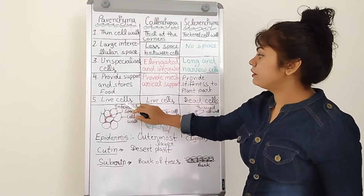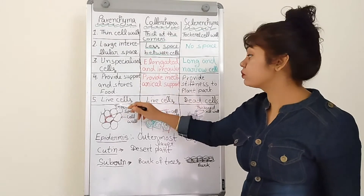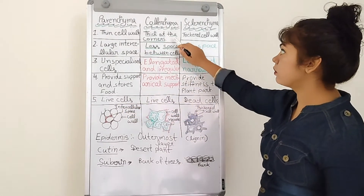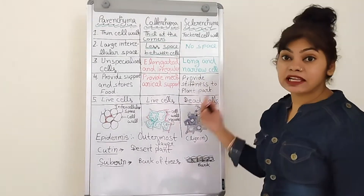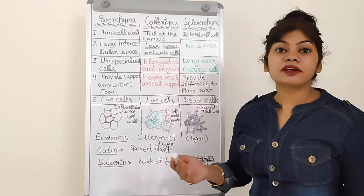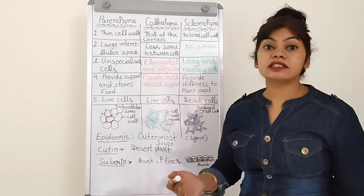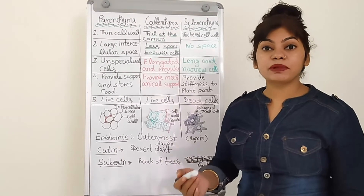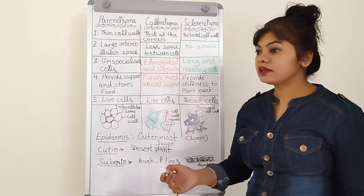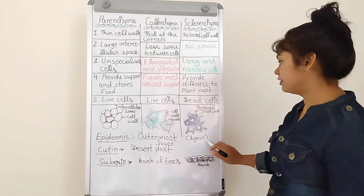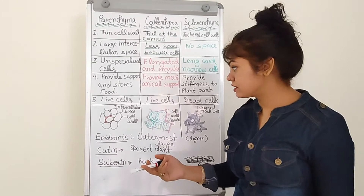Fifth point — parenchyma and colenchyma contain live cells. Sclerenchyma cells are dead. The hardness or stiffness in sclerenchyma is due to the presence of a chemical substance called lignin, which gives hardness and stiffness.